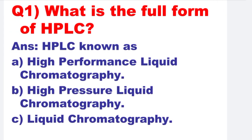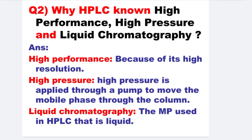Question number one: What is the full form of HPLC? HPLC is known as High Performance Liquid Chromatography, High Pressure Liquid Chromatography, and it is also known as Liquid Chromatography. It is known as High Performance because of its high resolution. It is known as High Pressure because high pressure is applied through a pump to move the mobile phase through the column. And it is known as Liquid Chromatography because the mobile phase used in HPLC is liquid.